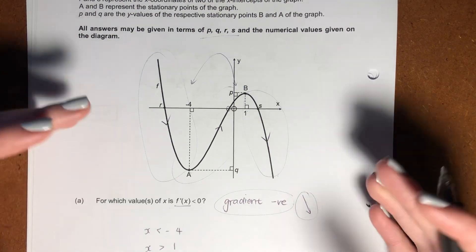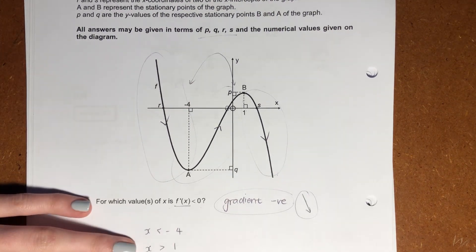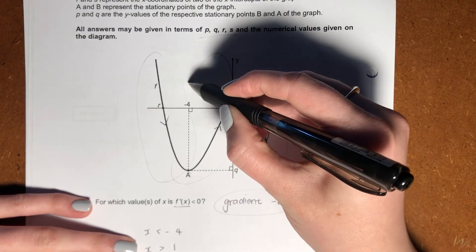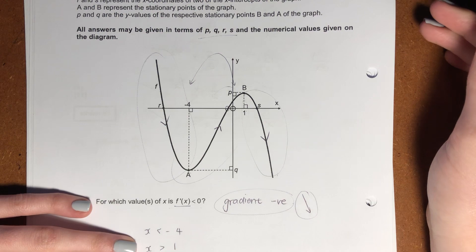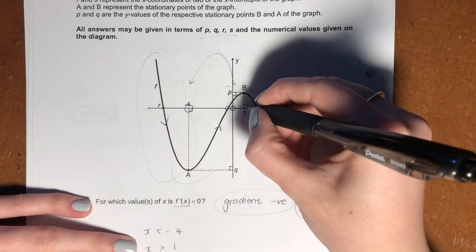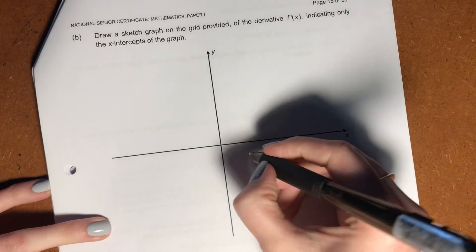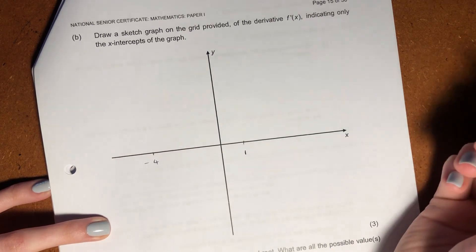So this is basically asking us to draw a graph representing the changing gradient for this cubic graph. We know that here it's negative. We know that here it's positive, and here it's negative. Where does it change from being positive to negative? At negative 4 and 1. So those are going to be our critical values. So over here, at 1, and over here, at negative 4.